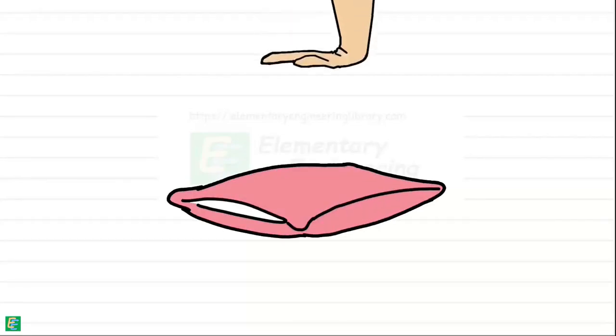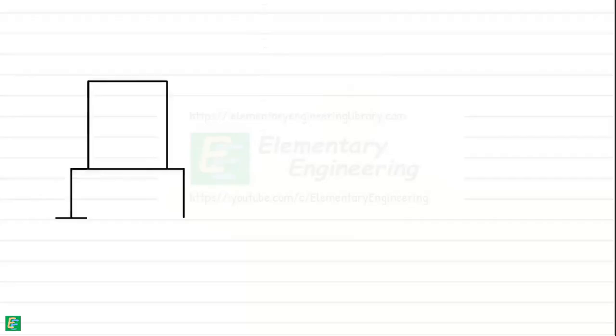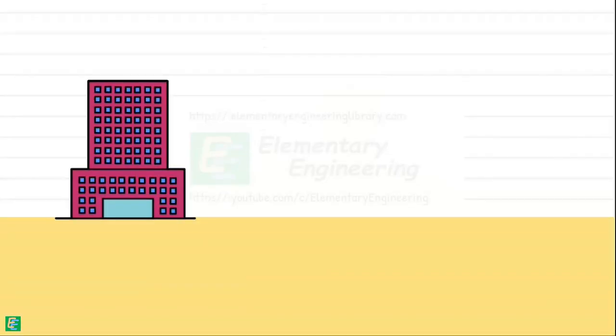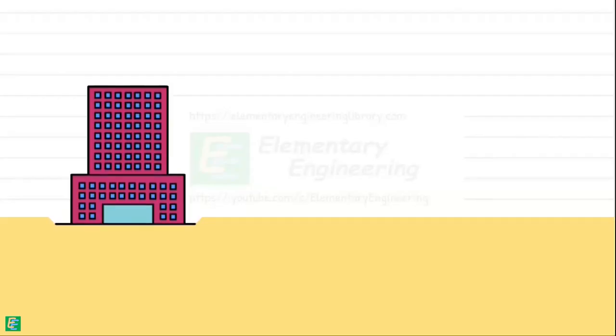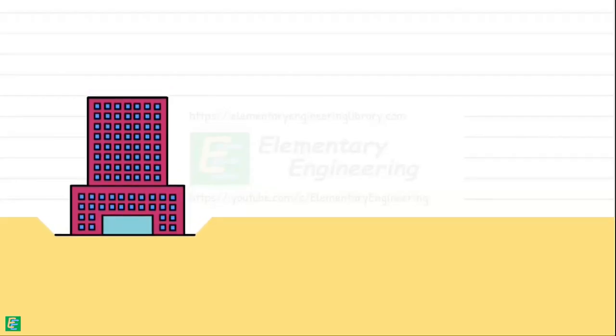When we press down on a soft pillow that we use to rest our head on, it compresses and goes down a bit. Similarly, when heavy buildings or structures are built on the ground, they can make the ground compress or sink down a little over time due to their weight. The sinking down or compression of soil caused by factors like weight of a building is known as settlement of soil.